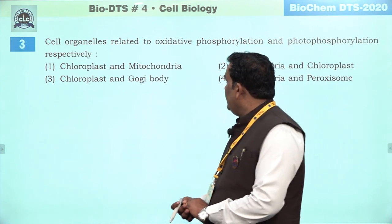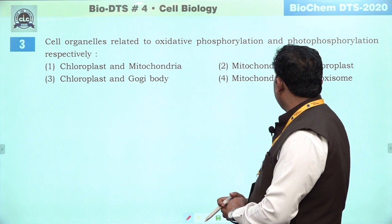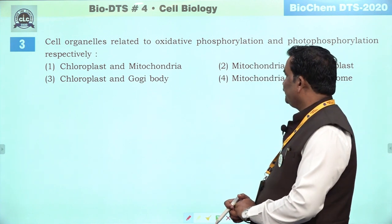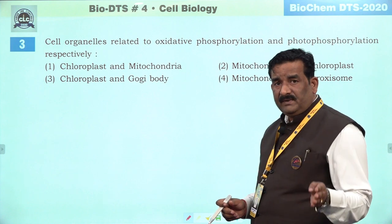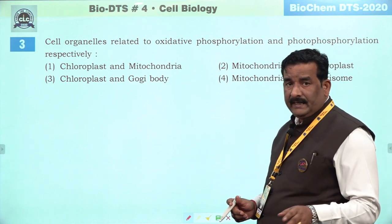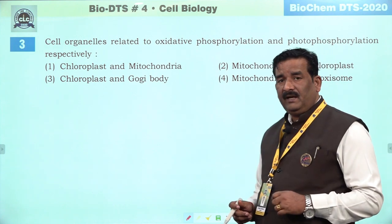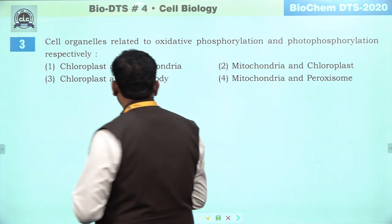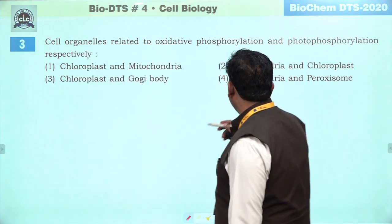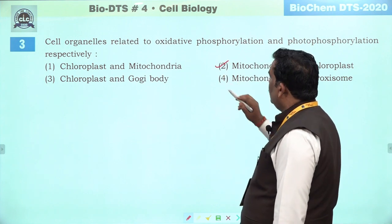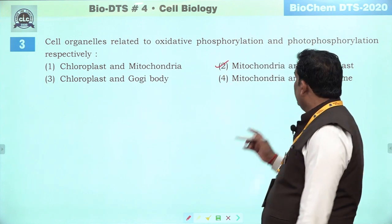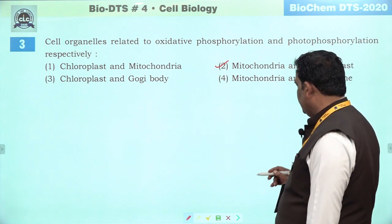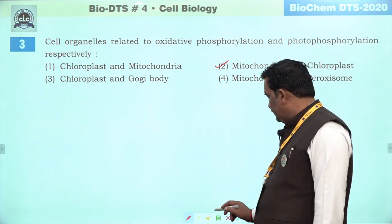Next question: cell organelles related to oxidative phosphorylation and photophosphorylation respectively. Oxygen ki presence mein ATP mitochondria mein banta hai. Light ki presence mein ATP chloroplast mein banta hai. Iska matlab hai ki humara right answer — mitochondria for oxidative phosphorylation and photophosphorylation occurs in chloroplast — second is the right answer.